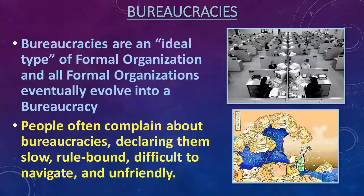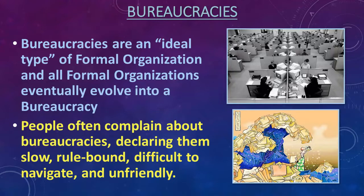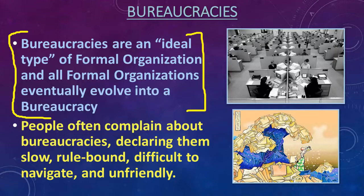Now we'll turn to two interlocking concepts: bureaucracies, and then McDonaldization. We already talked a little about bureaucracies in chapter four. Max Weber was the founding sociologist who talked about the bureaucratization of life and how bureaucracies were the ideal form of organizing a society. They're often called the ideal type of formal organization because they strive for organizational perfection and order. Many sociologists argue that most formal organizations, if left to their own devices long enough, will eventually evolve into a bureaucracy.